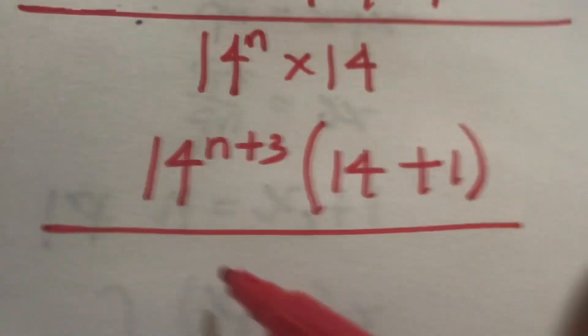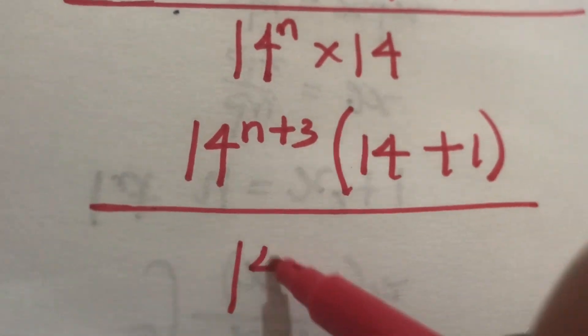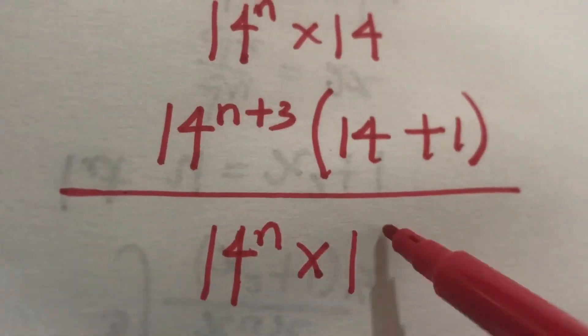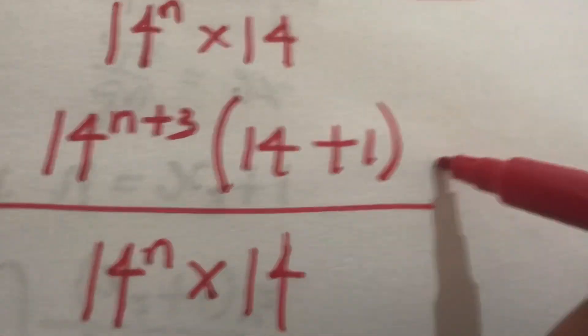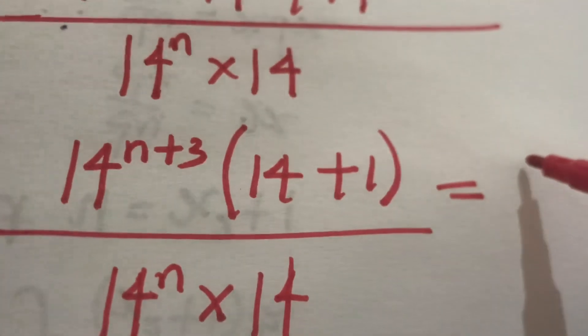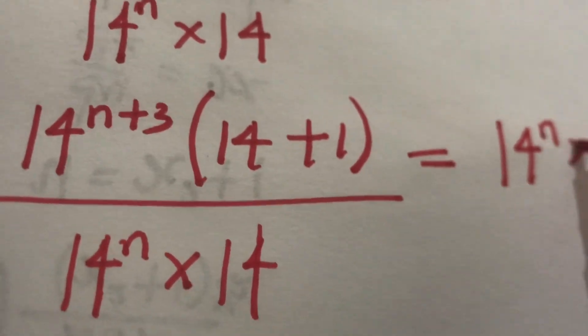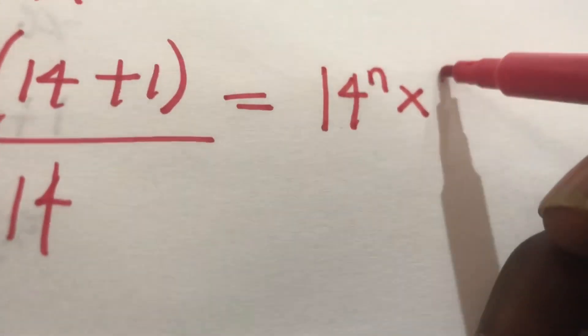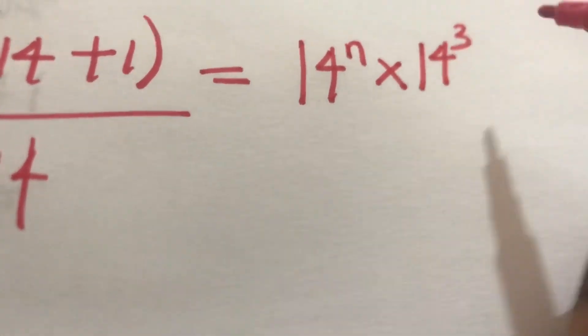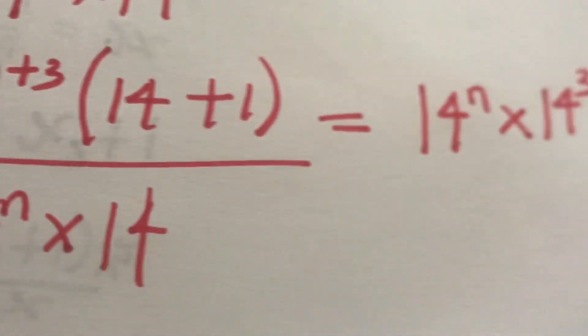We have this, so we have 14 to the power n, so we have 14 to the power n times 14 to the power of 3. So 14 plus 1 will give us this.